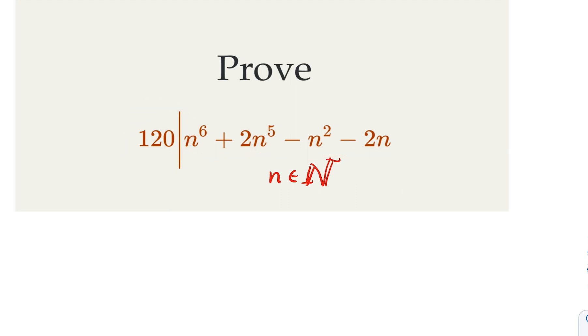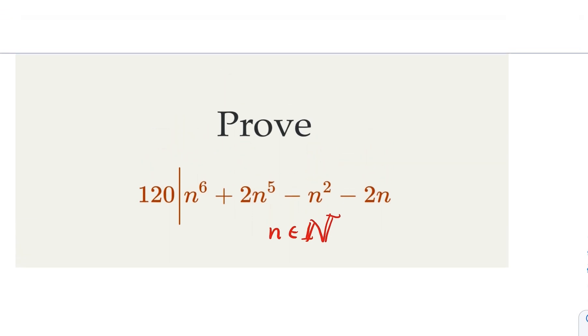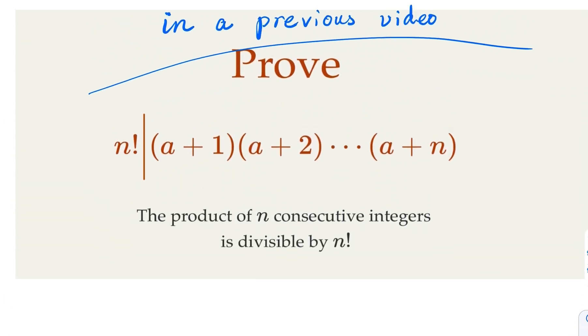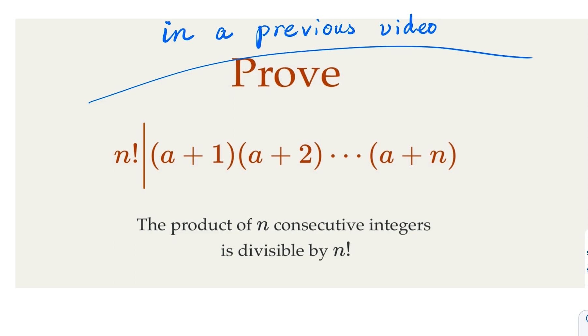What we're going to do is rely on a well-known fact that is covered in a previous video. We have proven that for n consecutive numbers, the product is going to be multiplied by n factorial. That is, the product of n consecutive integers is divisible by n factorial. We're going to use this fact in today's proof. Let's get started.